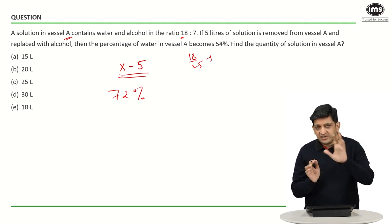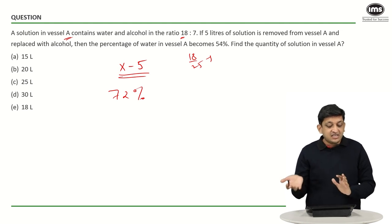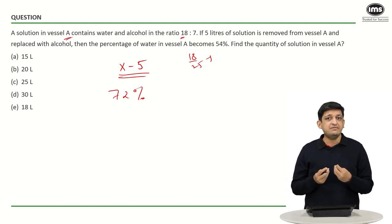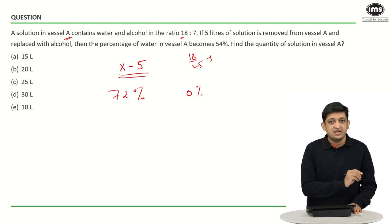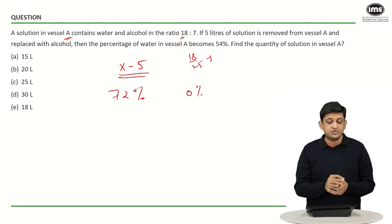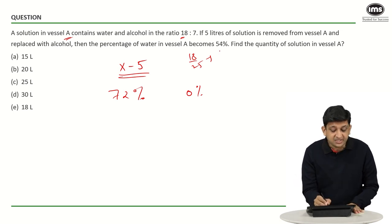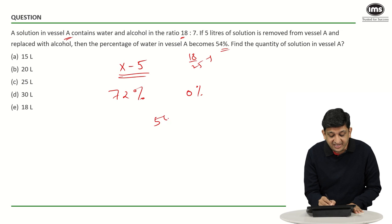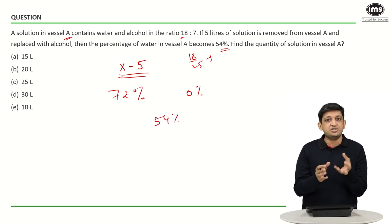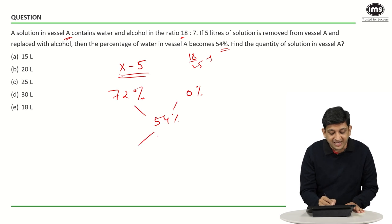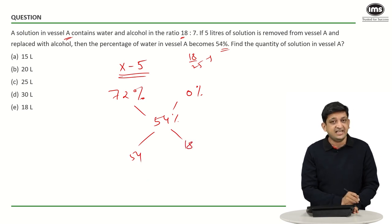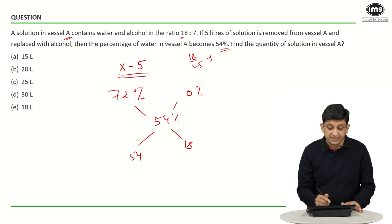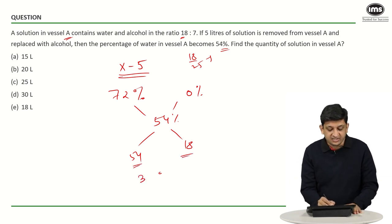What is happening is we are removing 5 liters of solution and then replacing it with pure alcohol. Pure alcohol contains 0 percent water. The resultant percentage of water in vessel A is 54 percent, which means when I add these two things it gives a mixture of 54 percent. By applying the rule of allegation: 54 and 0 gives a gap of 54; 54 and 72 gives a gap of 18. So these two need to be in the ratio 54:18, which is 3:1.